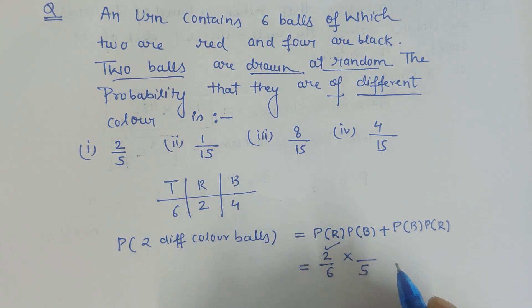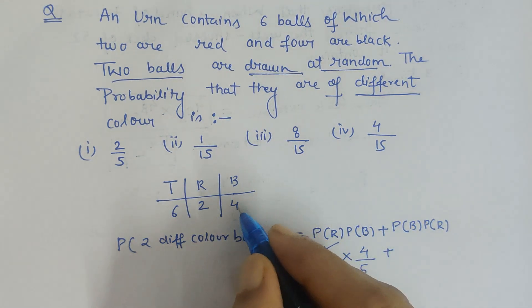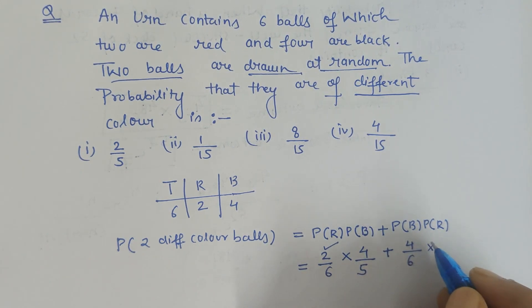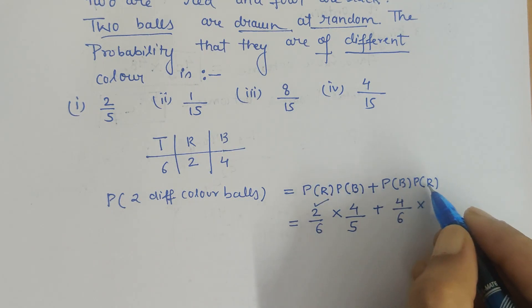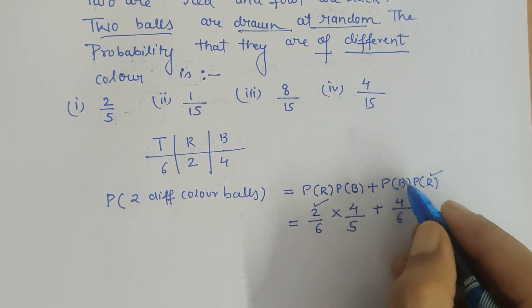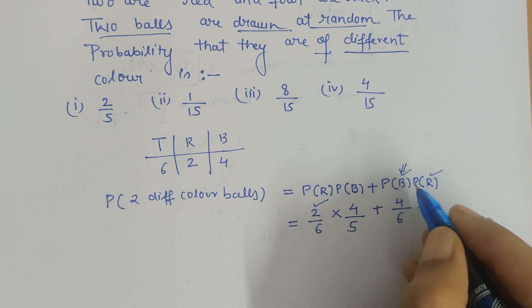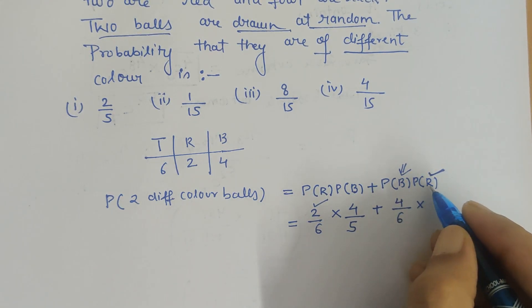Plus probability that the first ball drawn is black in color, so it would be 4/6. Now the probability that the second ball drawn is red - this event is taking place when one ball is already drawn. Out of the total six balls, only five balls are left in the second trial. So there are two red balls, and total balls is now reduced to five, so 2/5.